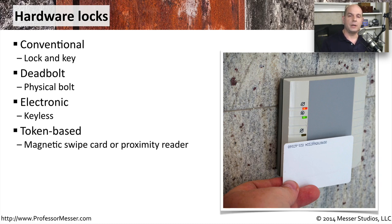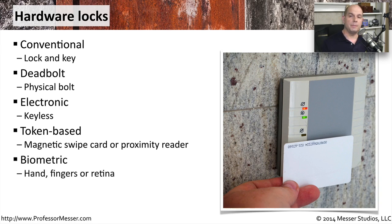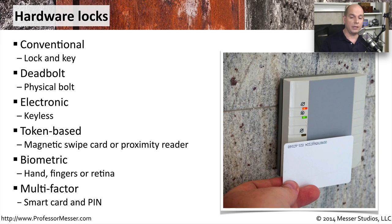Many of these electronic locks are token-based — you need some type of physical token to get into that area. This can be a magnetic swipe with a card reader, or it might have an RFID tag inside, and you simply get close and it will unlock the door. These are sometimes combined with a biometric reader that may take your hand, a fingerprint, or look at the retina of your eye, providing multi-factor ways to authenticate or unlock a door.